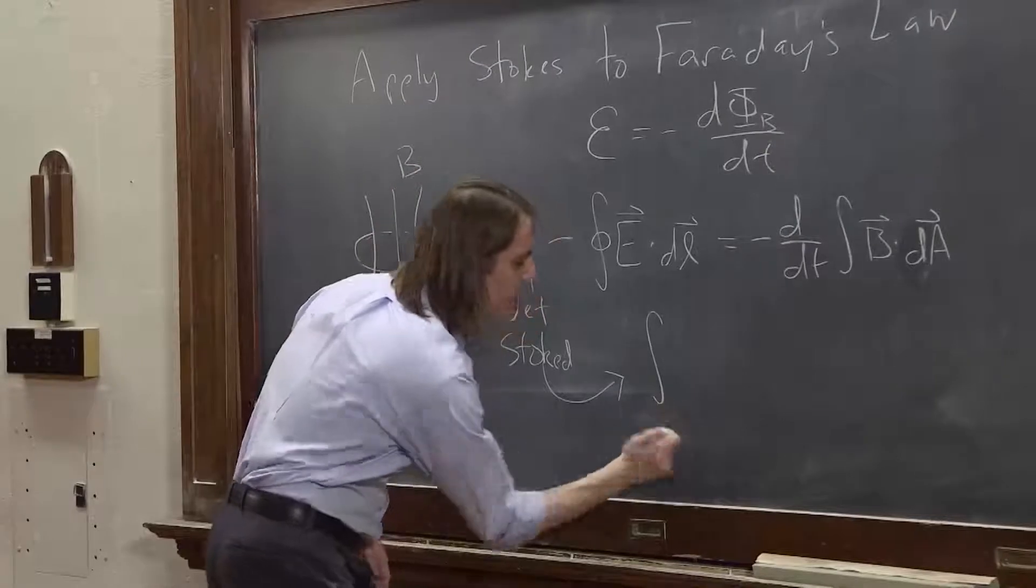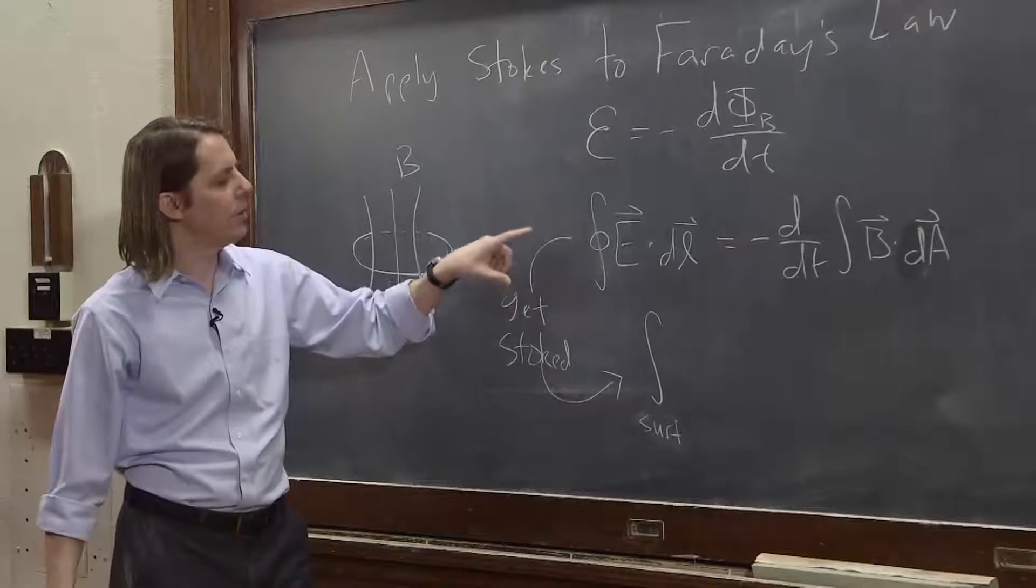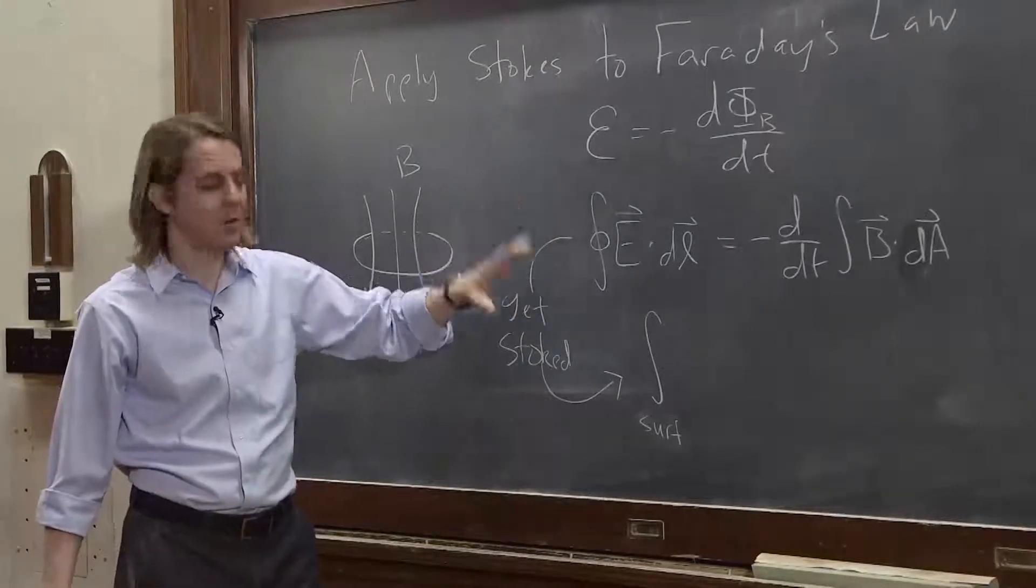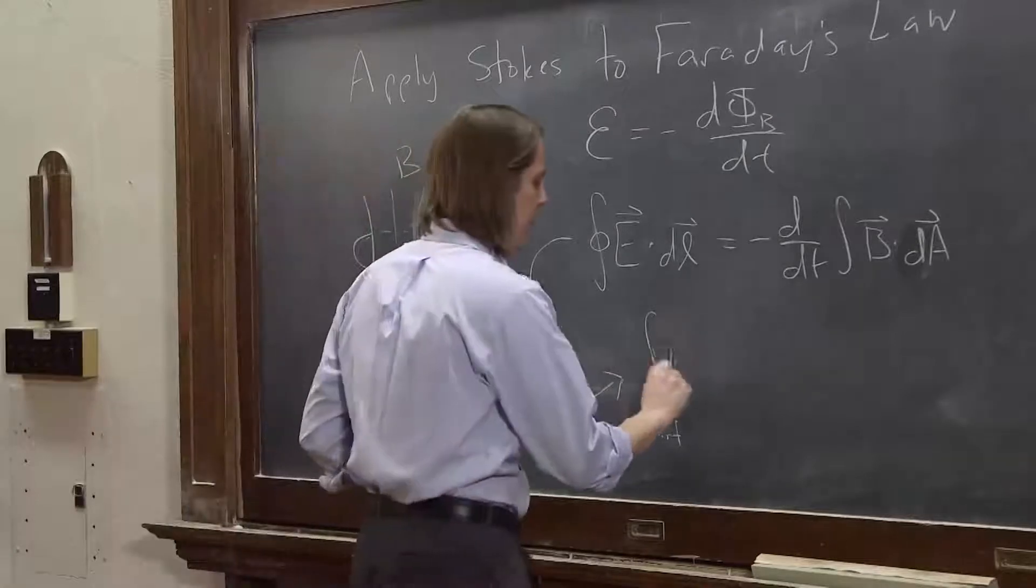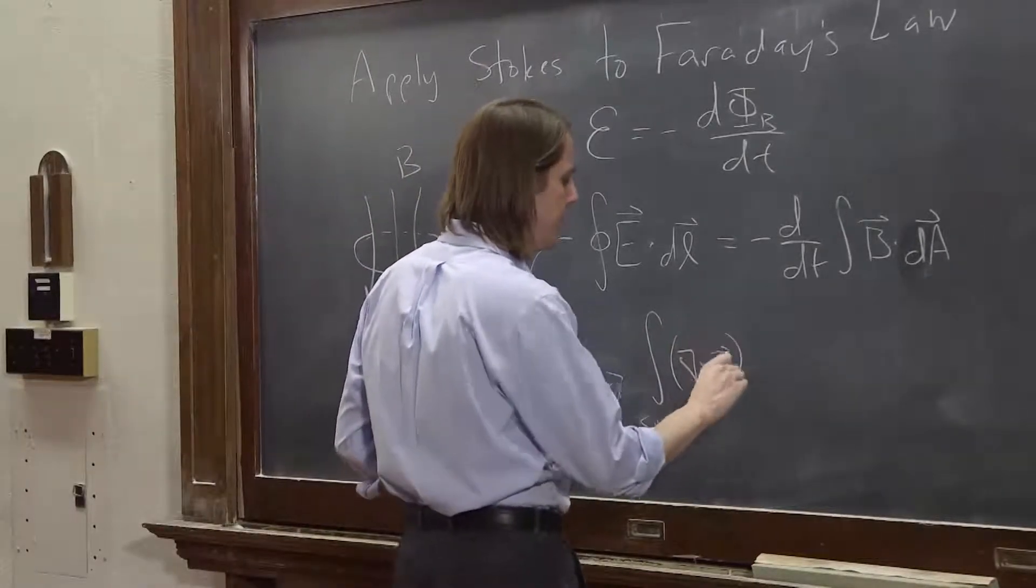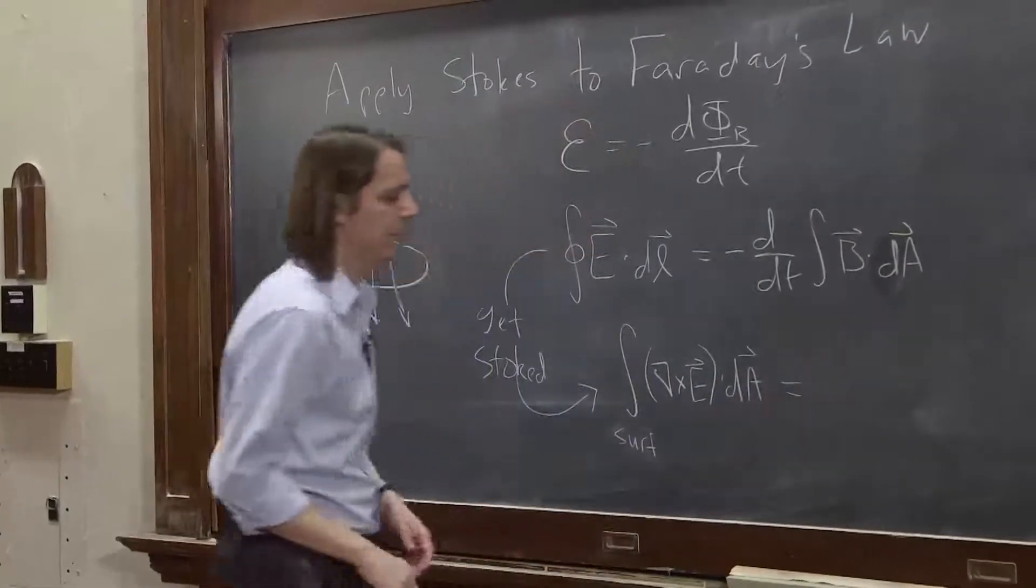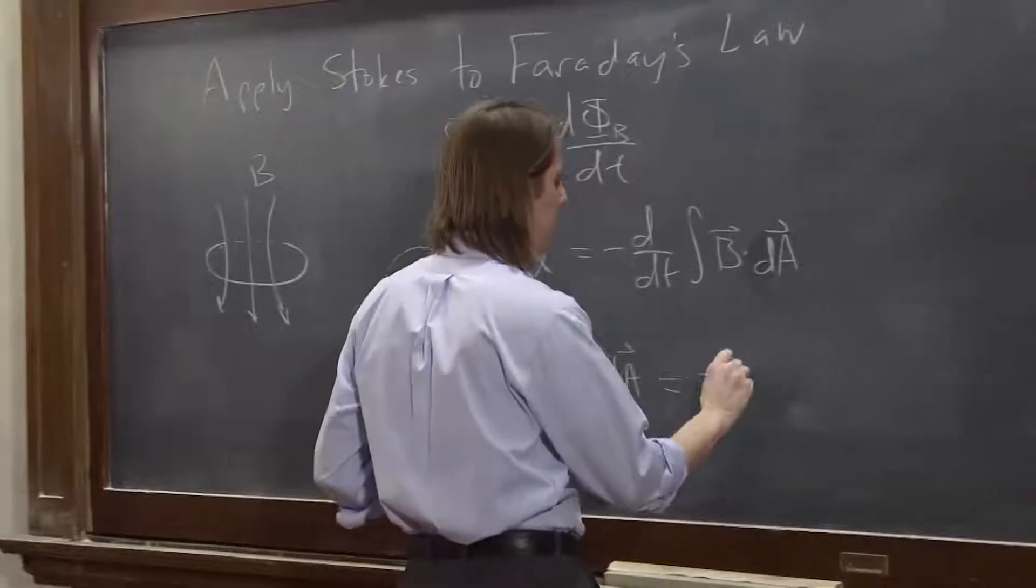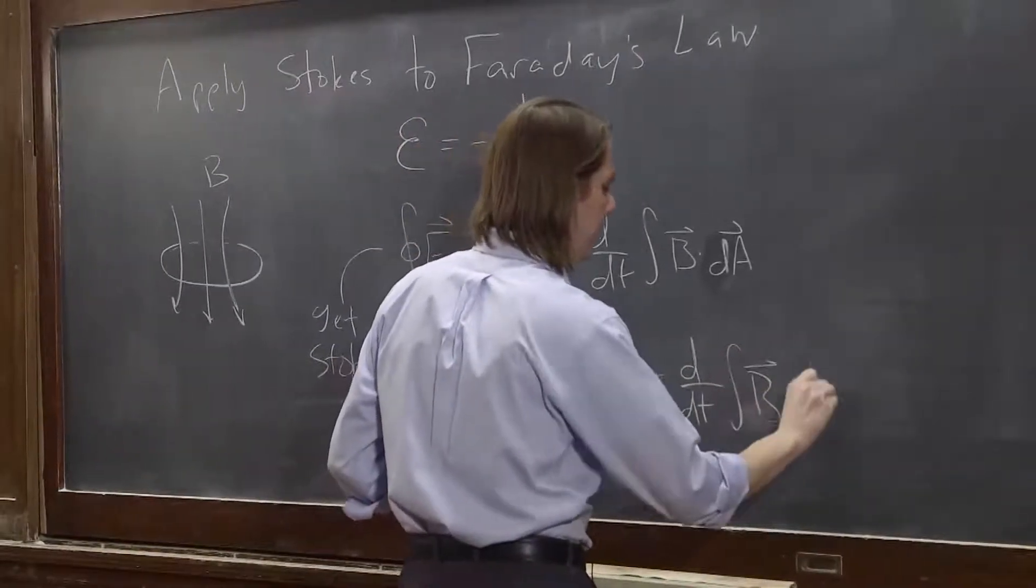The integral, if this closed path went around a loop, then the surface is just inside that loop, of that surface of del cross E dot da. And that equals minus d dt integral of b dot da.